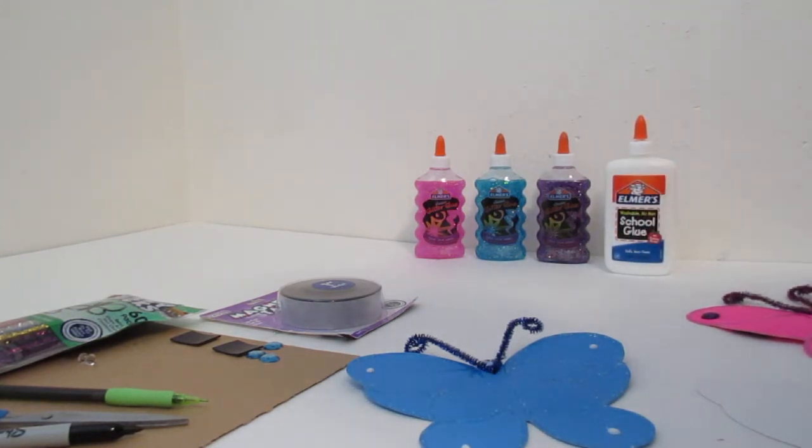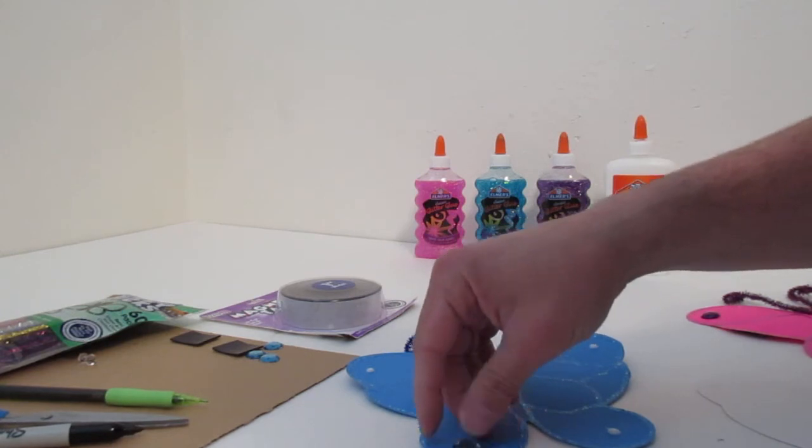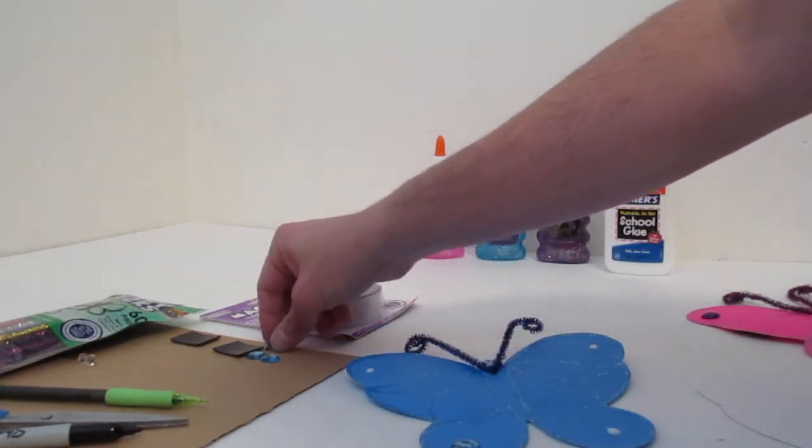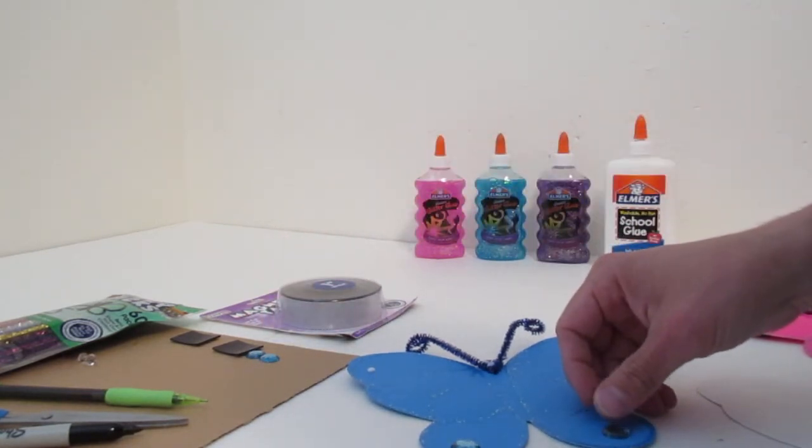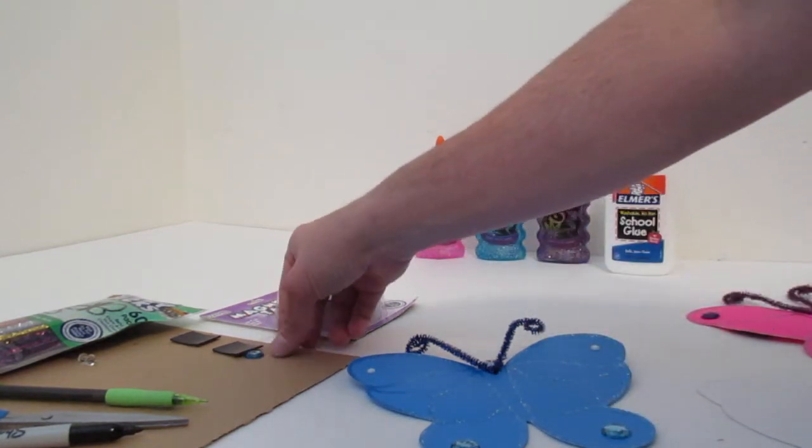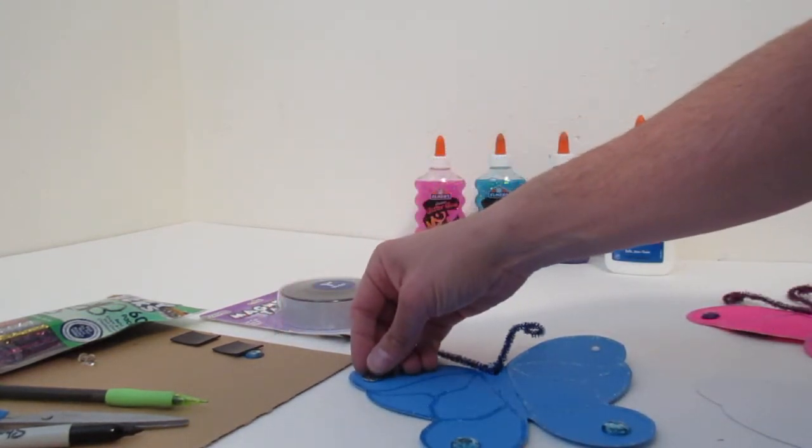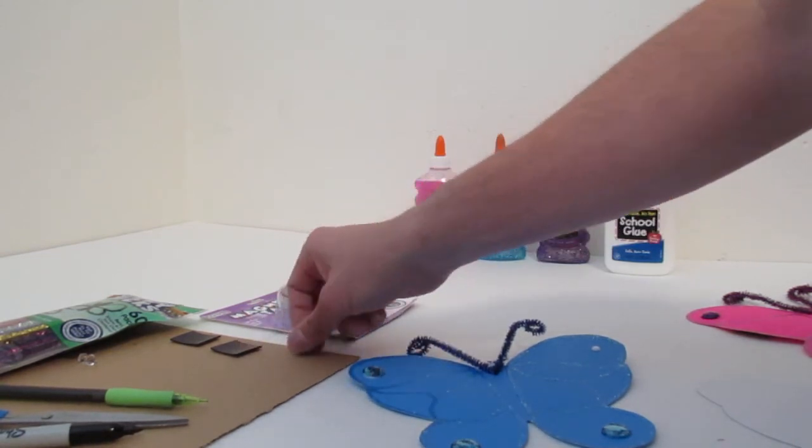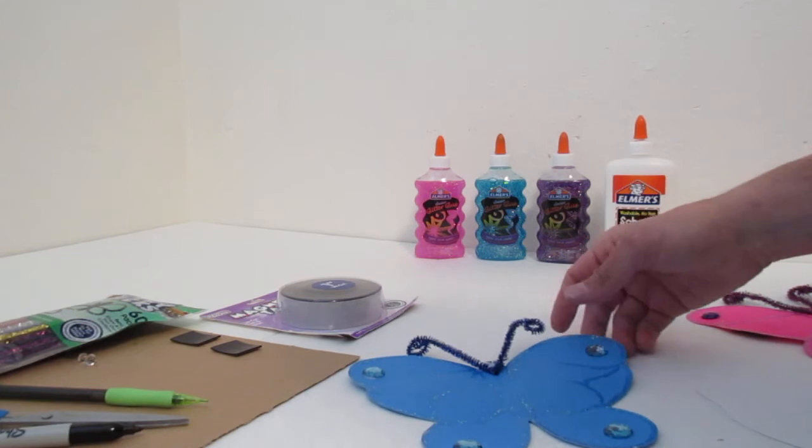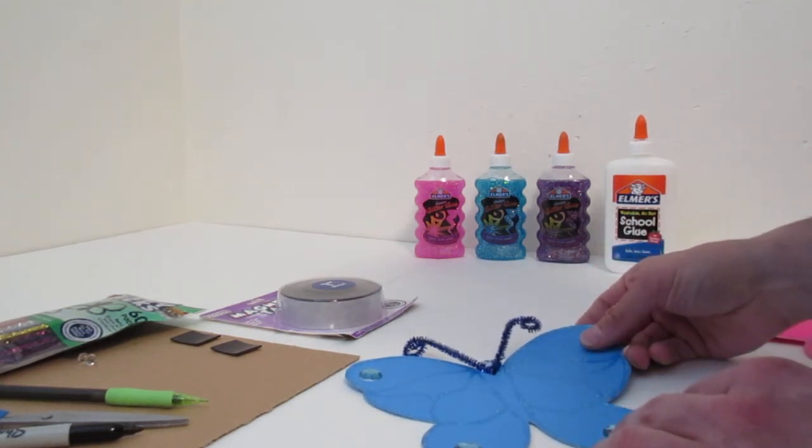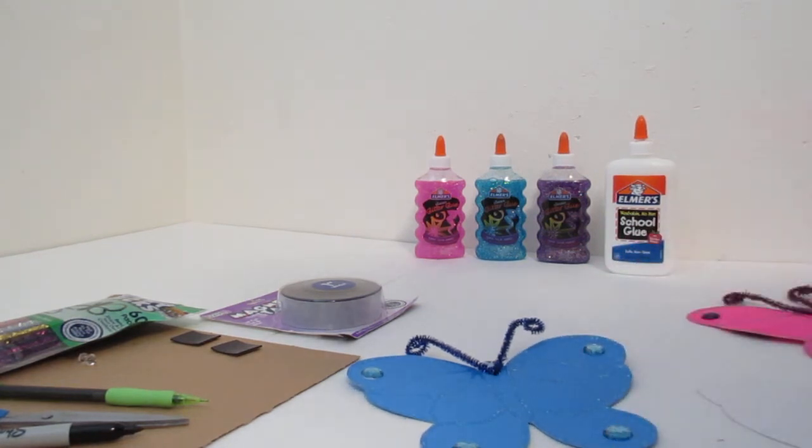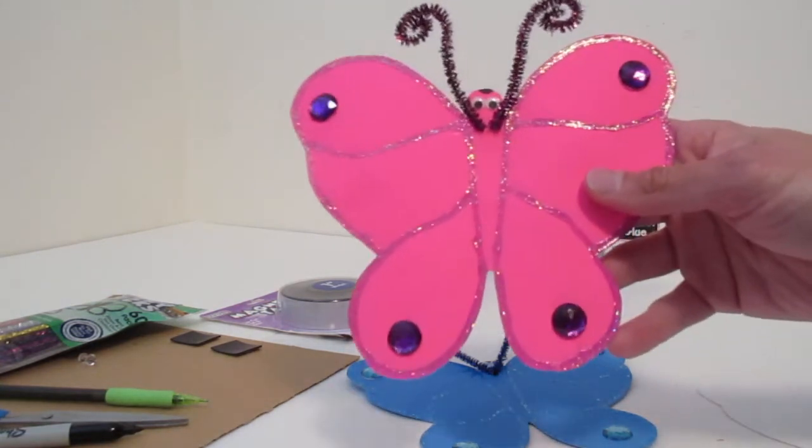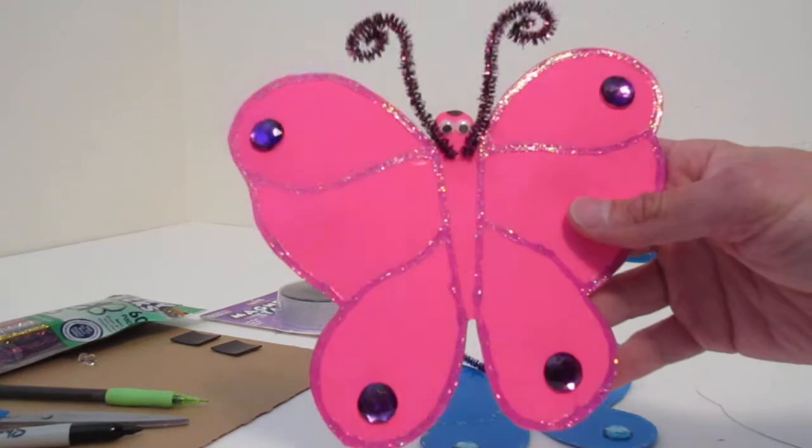If you want it to dry faster, you can just have it underneath the ceiling fan when you're done. Now I can't pick him up because all the stuff will fall back off. The end result is it'll look like this, and when the light hits it the glitter shows.